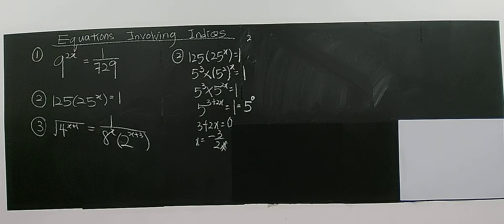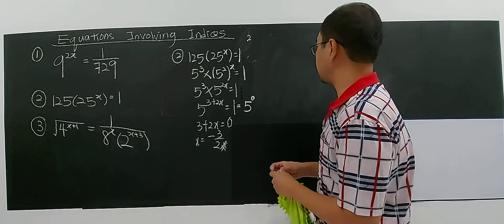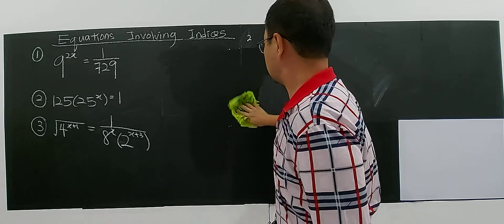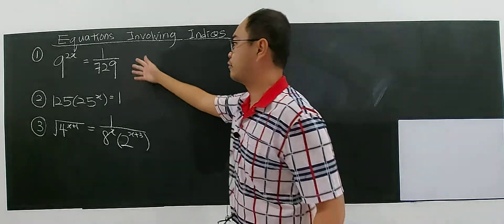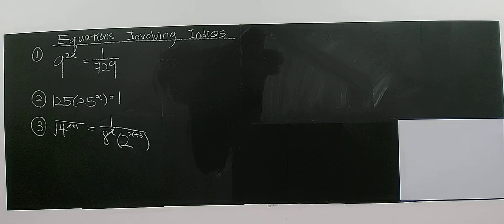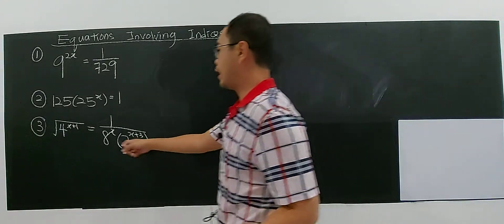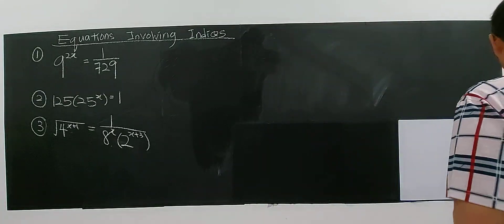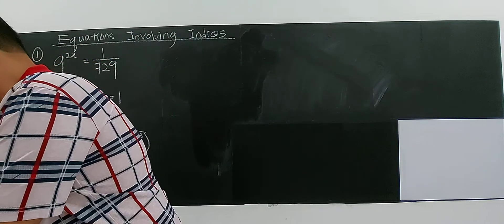Let's move on to the last example, number 3. This one is a bit more complicated compared to questions 1 and 2. The numbers 2, 8, and 4 all have the same common base, which is 2 — that's the lowest base.